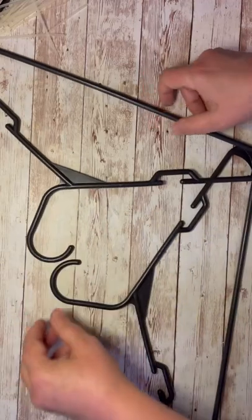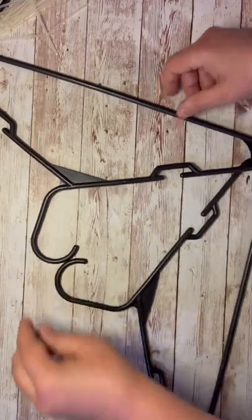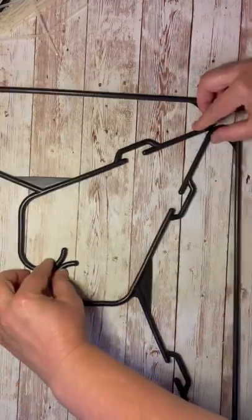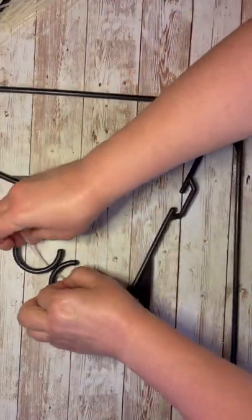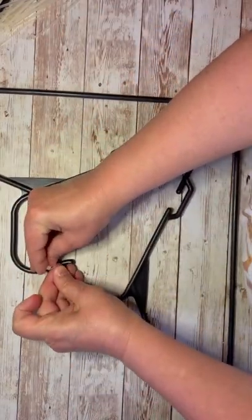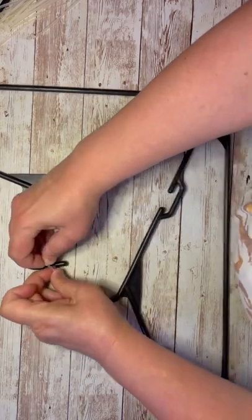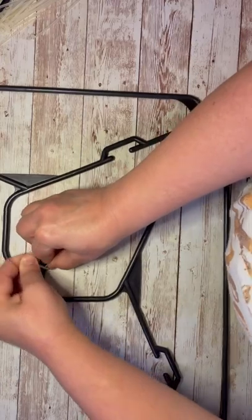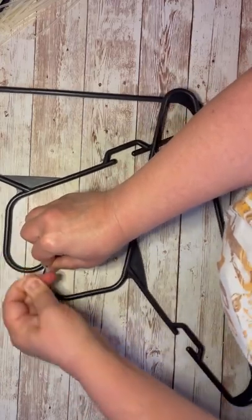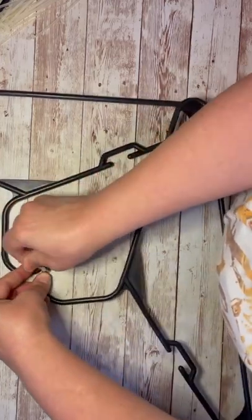All right, so start by taking four hangers from the Dollar Tree. I'm going to take two and make a little heart shape. Put a zip tie and attach it at the top. I'm using little zip ties, but I don't think it matters what size they are. I'm just attaching it there, and then I'll attach the bottom with another zip tie.